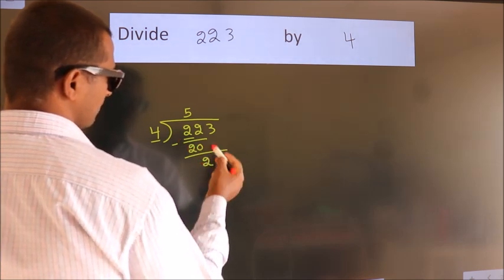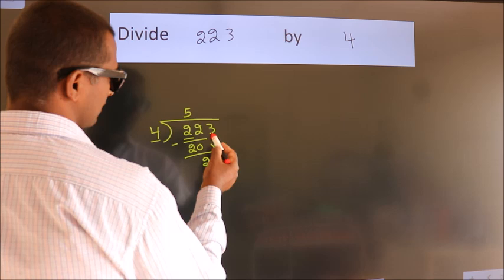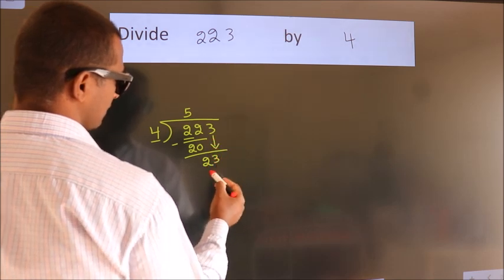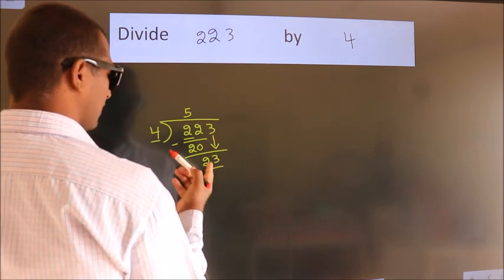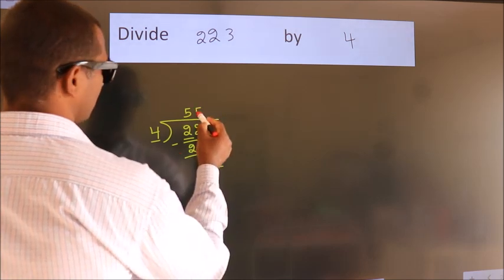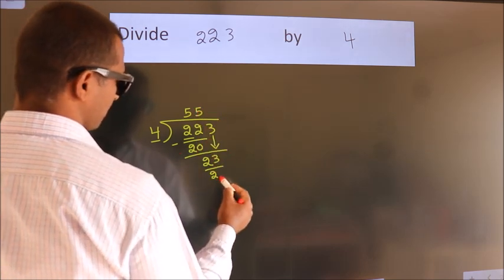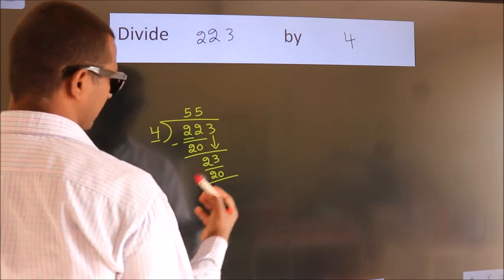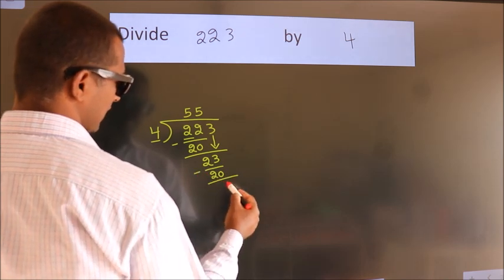After this, bring down the beside number. So 3 down, giving us 23. A number close to 23 in the fourth table is 4 fives, 20. Now we subtract and get 3.